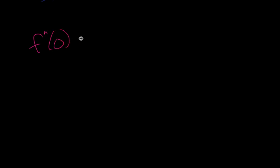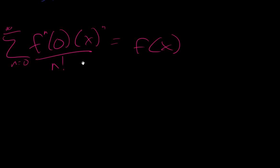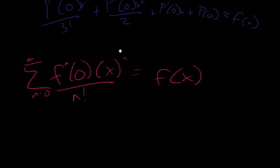So we finish writing: p triple prime of zero times x cubed over 3 factorial, plus p double prime of zero times x squared over two, plus p prime of zero times x, plus p of zero, is roughly equal to f of x. And this is eventually going to end up as the Maclaurin series, where we have the sum from n equals zero to infinity of the nth derivative of f at zero, times x to the nth power, all over n factorial, equals f of x. This is the Maclaurin series — that's how it's derived.